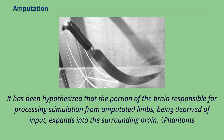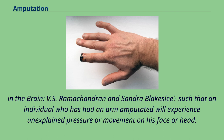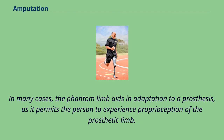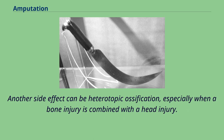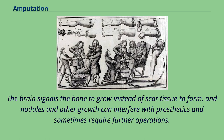As described in the brain by V.S. Ramachandran and Sandra Blakeslee, an individual who has had an arm amputated will experience unexplained pressure or movement on his face or head. In many cases, the phantom limb aids in adaptation to a prosthesis, as it permits the person to experience proprioception of the prosthetic limb. To support improved resistance or usability, comfort, or healing, some type of stump socks may be worn instead of or as part of wearing a prosthesis. Another side effect can be heterotopic ossification, especially when a bone injury is combined with a head injury. The brain signals the bone to grow instead of scar tissue to form, and nodules and other growths can interfere with prosthetics and sometimes require further operations.